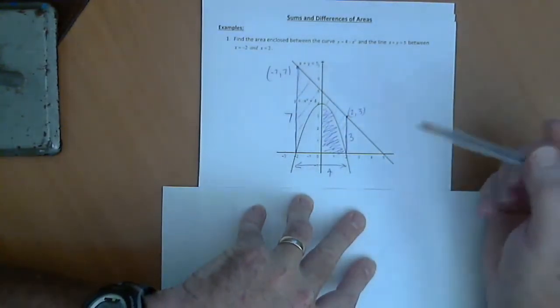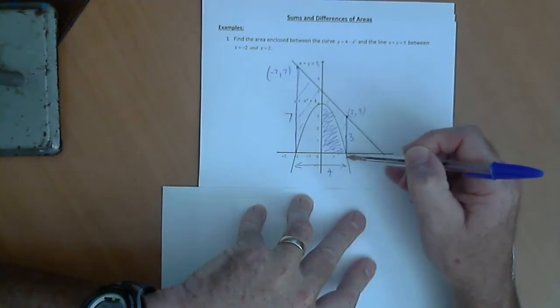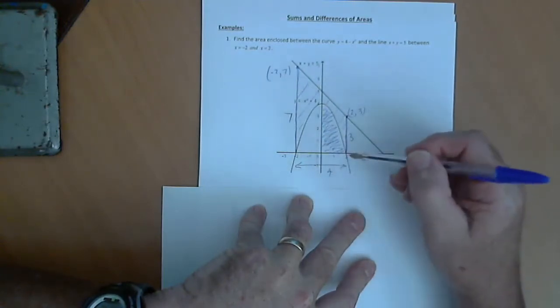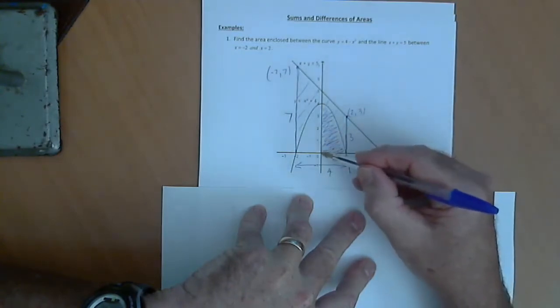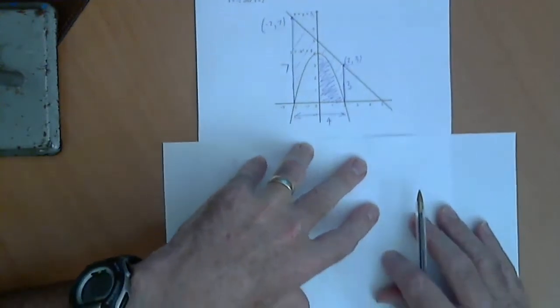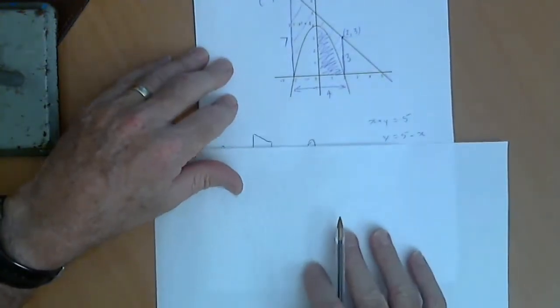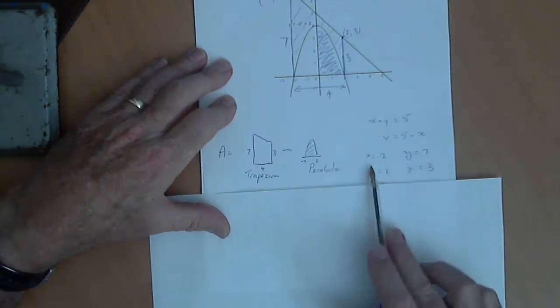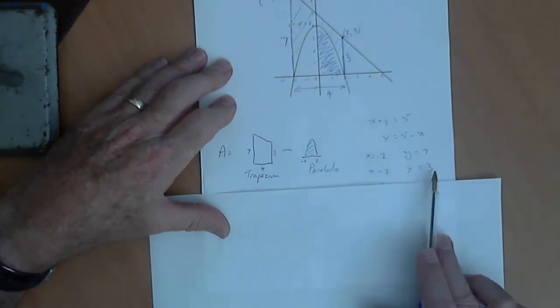The other thing that will help us is that our parabola is symmetric about the x-axis. So, rather than integrate from minus 2 to 2, we'll integrate from 0 up to 2 and double the area, which is a little bit easier for us. So, first step, we talked about working out the boundary values and the length of our trapezium.